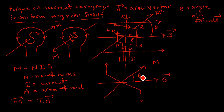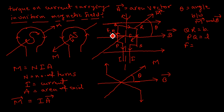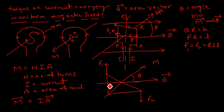The angle shown here is theta. If QR is equal to b, and PQ is equal to L, then F1 is equal to F2 — this is BIL. The perpendicular distance from each side to the midpoint is b upon 2, and similarly this distance is also b upon 2, because the total width is b.